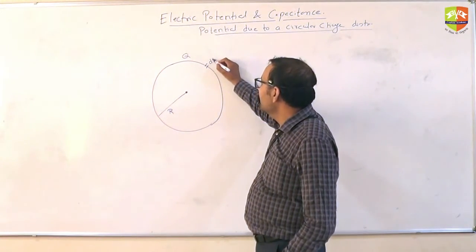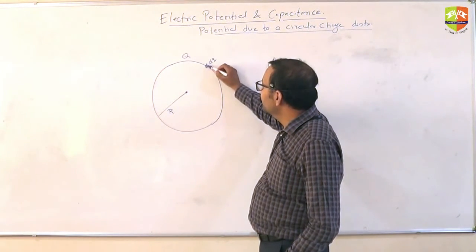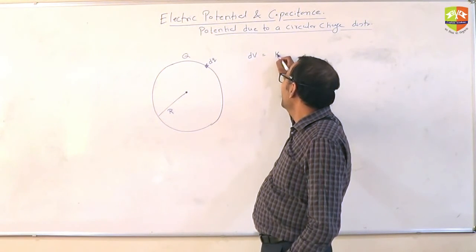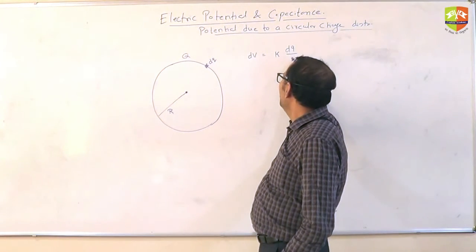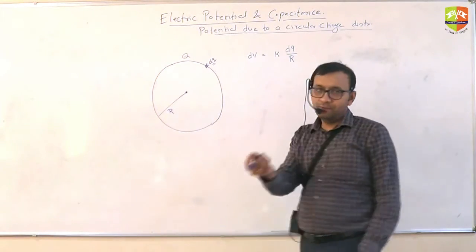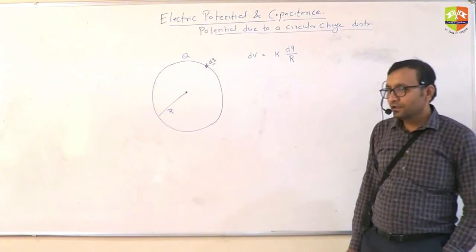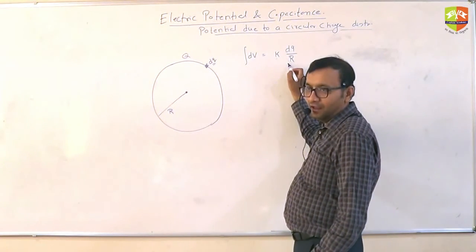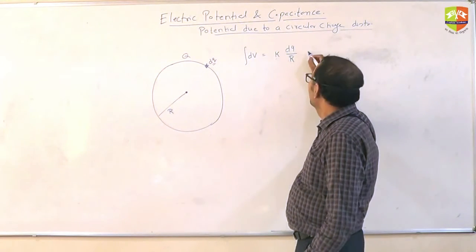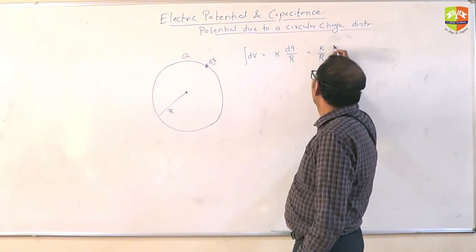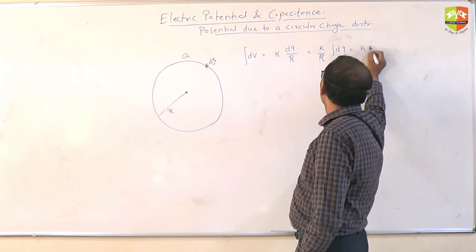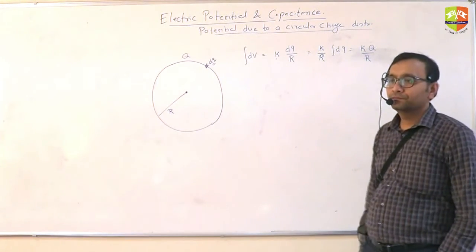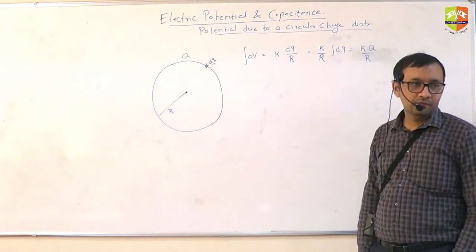Suppose you consider a small charge dq over here. So what is the potential due to this dq? What is it? dV is equal to k times dq by r. It's a point charge, right? dq is a small charge. Right? This is the potential. So total potential is integral of this. Now k and r are constants. So this will be k by r integral dq which will be k capital Q by r. Okay? Fine.